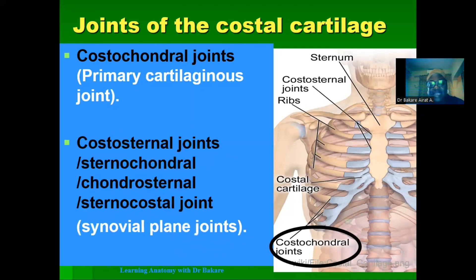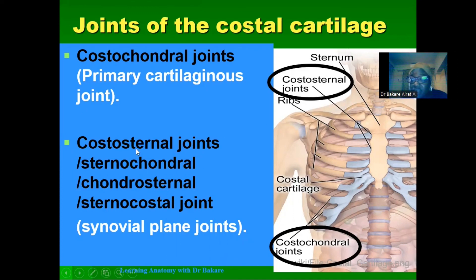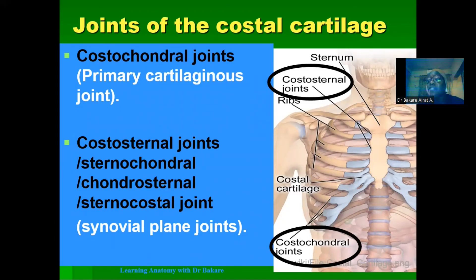We also have the costosternal joint — the joint seen between the costal cartilage and the sternum. Since the ribs are connected to the sternum through the costal cartilage, the costal cartilage must then connect to the sternum at the costosternal joint. This joint can also be referred to as the sternocostal joint, the chondrosternal joint, or the sternocostal joint. All these names refer to the joint between the costal cartilage and the sternum, and this joint is a plain synovial type of joint.